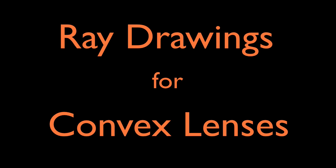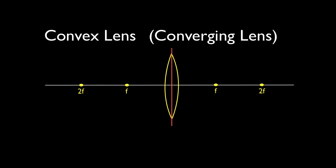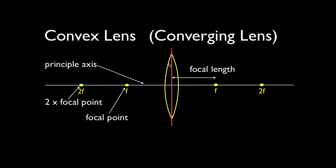In today's video I'm going to go over drawing ray diagrams for convex lenses. This is our general setup that you see most of the time in a textbook. Here we have our convex or converging lens. One part of the diagram is the principal axis — the white line running horizontal through the center of the lens. Then we have our focal point at one focal length from the lens, and the point 2f, which is twice as far away. Since this is a bi-convex lens, there is a focal point and a 2f on each side of the lens.